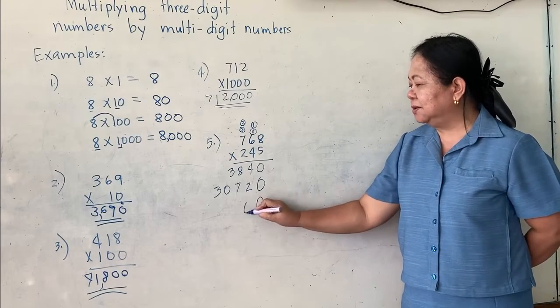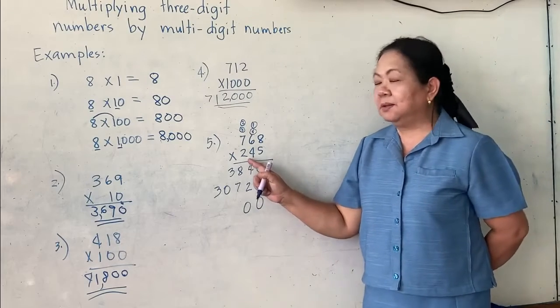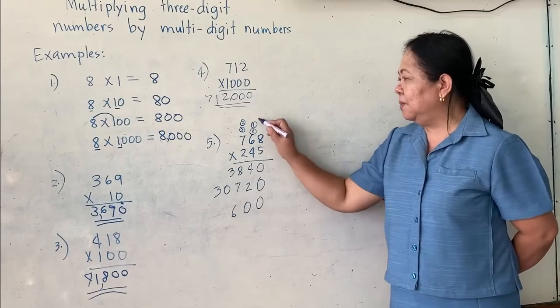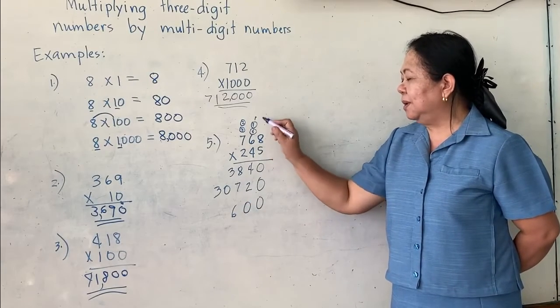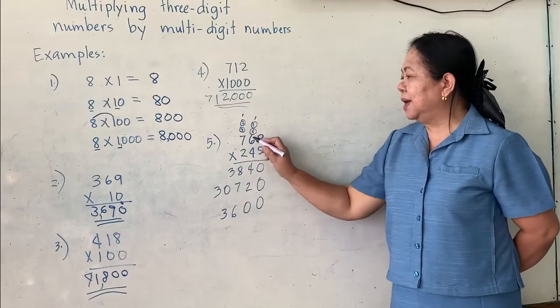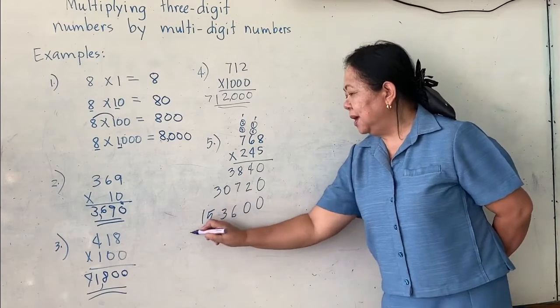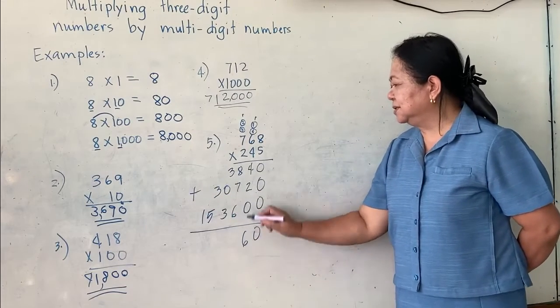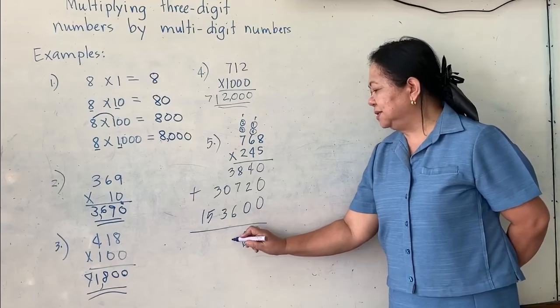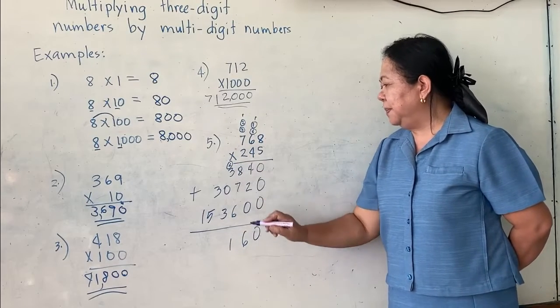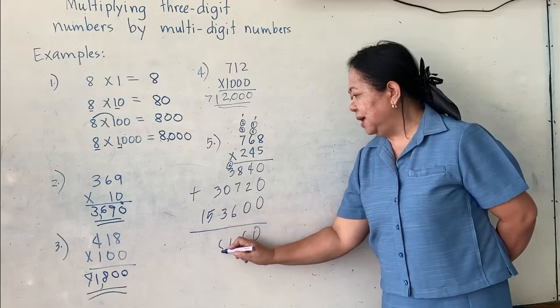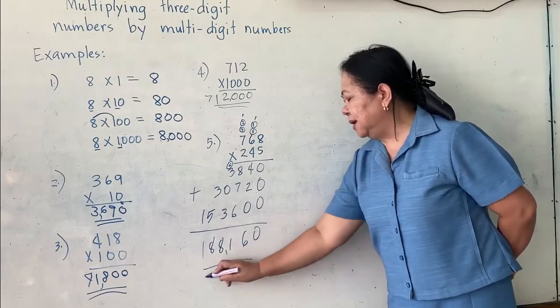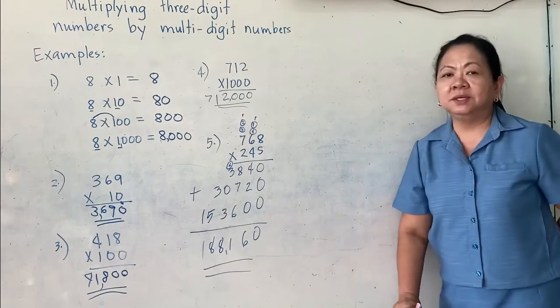And then, here, we write two zeros. Because we are using now the multiplier on the hundreds place. 2 times 8 equals 16, carry 1. 2 times 6, 12 plus 1 is 13. Carry 1. 2 times 7 is 14 plus 1 is 15. And then, add 0. 4 plus 2 is 6. 8 plus 7 is 15 plus 6 is 21, carry 2. 2 plus 3 is 5 plus 3 is 8. 3 plus 5 is 8. And bring down 1. The answer is 188,160.